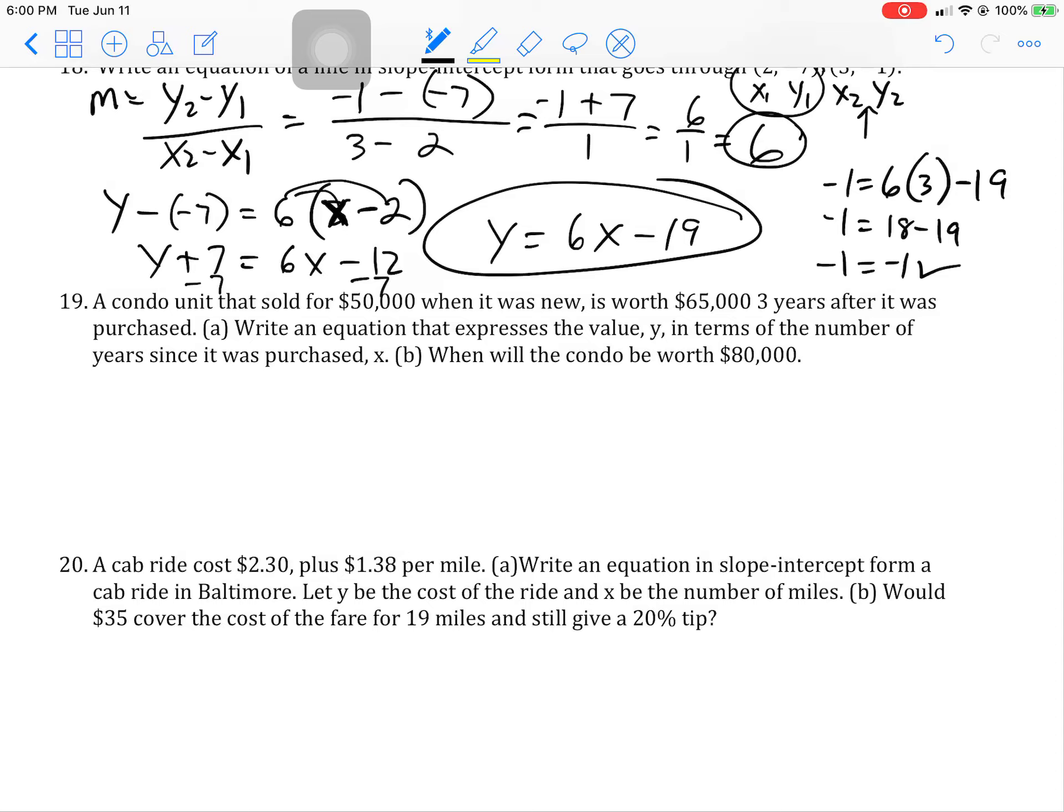All right, number 19. A condo unit was sold for $50,000 when it was new. It was worth $65,000 three years after it was purchased. Write an equation that expresses the value Y in terms of the number of years since it was purchased as X. So it was purchased when the year was zero, since everything else is from the year it was purchased. So three years after that, it was worth $65,000.